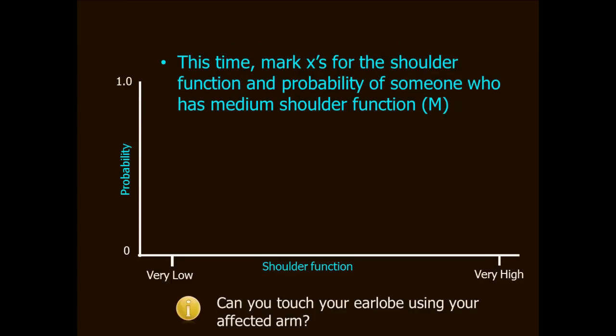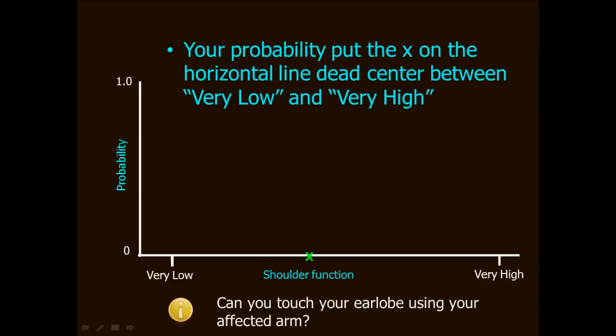Just one more of these. This time we are going to locate someone called M on the plot. Now lest you get confused, this is not Judi Dench's character in the James Bond movies. Rather it stands for someone with medium shoulder function. So as you did for VP and VH, locate M on the x-axis and the y-axis. I can guess where you put M on the shoulder function axis. Most likely you made a mark somewhere about halfway between very low and very high.